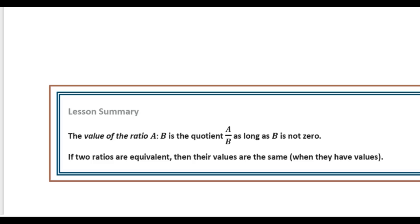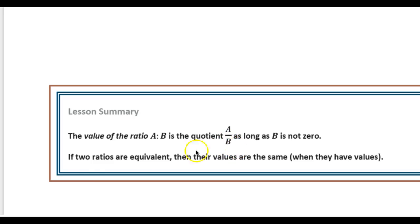Let's look at our lesson summary. The value of a ratio a to b is the quotient a over b. Remember that the fraction bar in the middle also means divided by, which is what quotient means. So a to b is the quotient a over b, as long as b is not zero — you can't have zero as a denominator in a fraction. If two ratios are equivalent, then their values are the same when they have values.